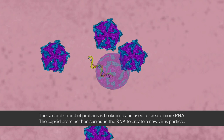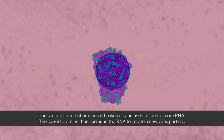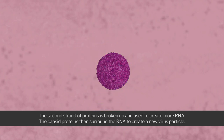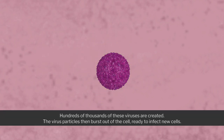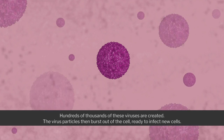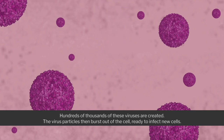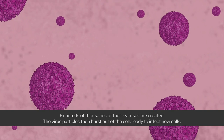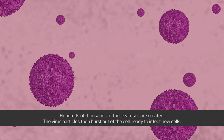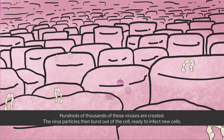The capsid proteins then surround the RNA to create a new virus particle. Hundreds of thousands of these viruses are created. The virus particles then burst out of the cell, ready to infect new cells.